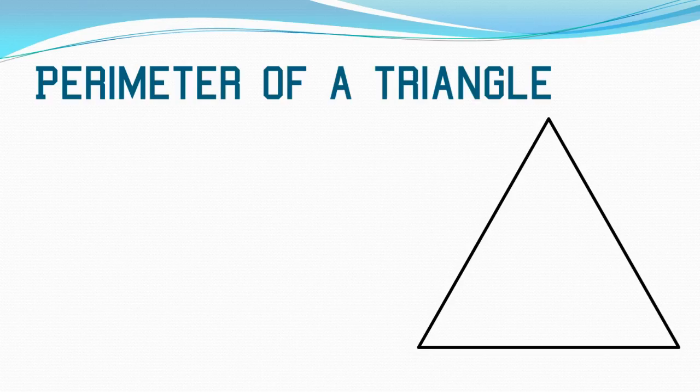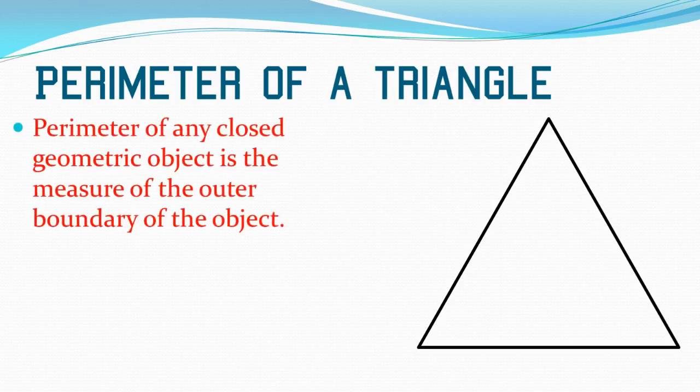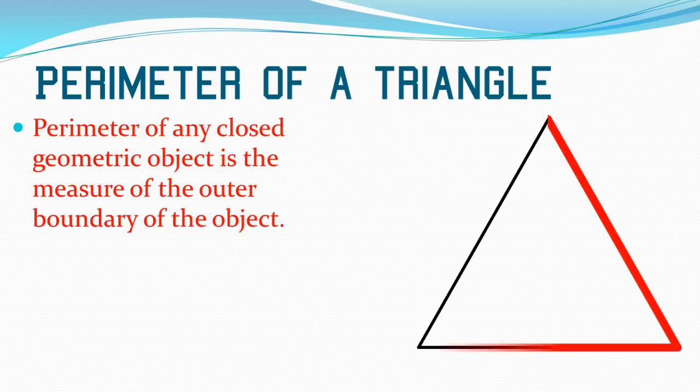In order to understand perimeters, let's do a little review. The perimeter of any closed geometric object is the measure of the outer boundary of the object. One way to think of the perimeter is the outer boundary, the outer shading, the outer line of any geometric shape.